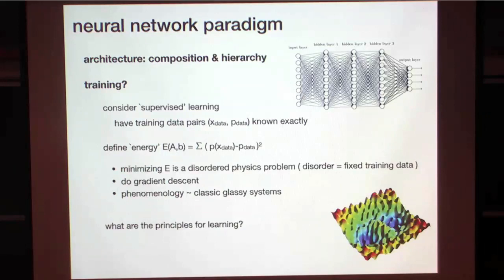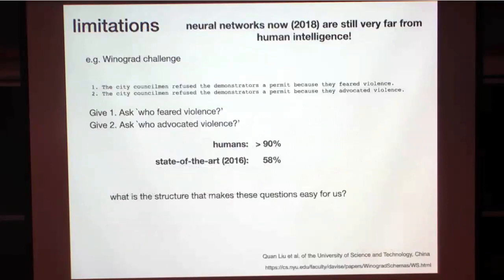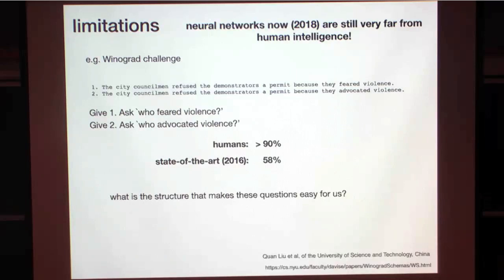Many colleagues are trying to understand this learning process and figure out the principles for learning. One direction physicists can contribute to is understanding this process. But for me, what's more interesting is looking at problems where deep learning is not yet successful, in particular when it comes to natural language processing. As of now, state-of-the-art systems are really not very close to human intelligence, and it's usually not quantified very well.